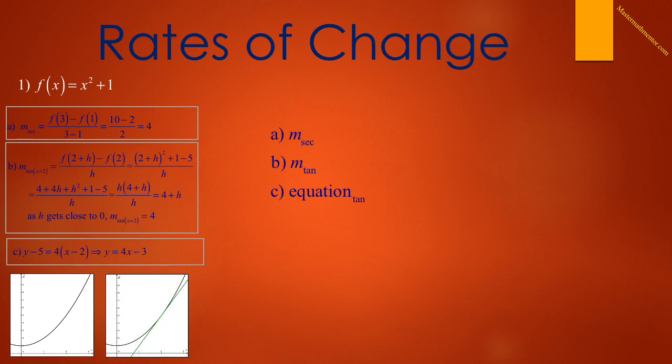Finally, we want the equation of the tangent line at x equals 2. We use our point-slope formula. We know the point is (2, 5), and from part b we know the slope of the tangent line is 4. So we get y minus 5 equals 4(x minus 2), and y equals 4x minus 3. We use our calculator to confirm our answer, and the tangent line appears to be tangent to the curve at x equals 2.